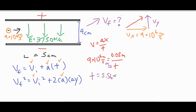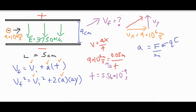Our time comes out to be 5.56 times 10 to the negative 9th seconds. Now we're going to use Newton's second law to find our acceleration: acceleration equals the force over the mass. We're going to substitute out that F for qE, because we know q the charge of an electron.